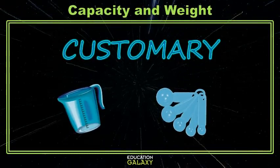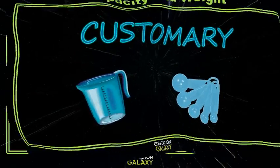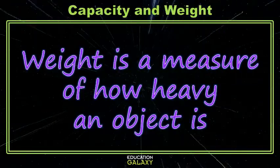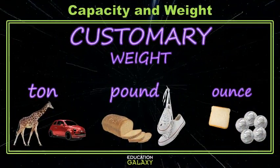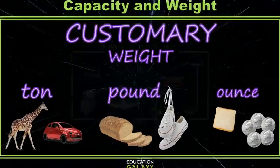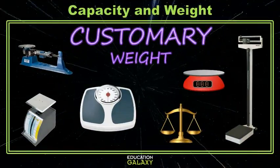So what is weight? Weight is the measure of how heavy an object is. The units for that in the customary system are tons, pounds, and ounces. So what do we use to measure weight? We use scales, and there are plenty of them all around us.